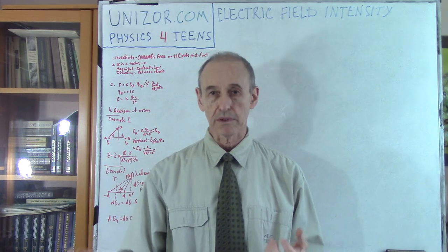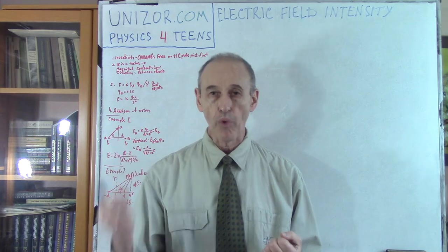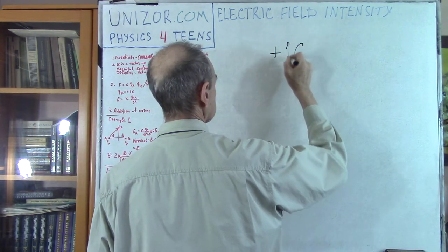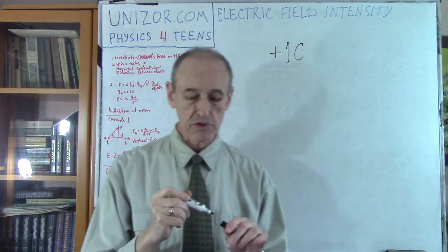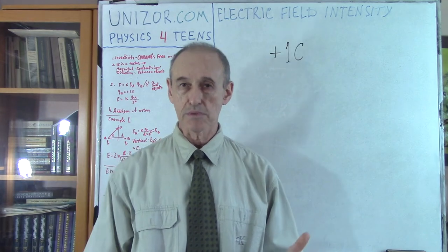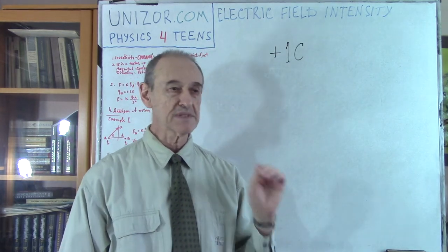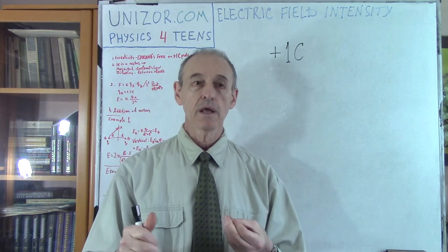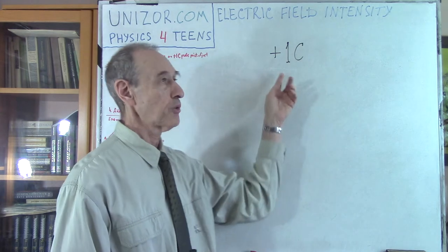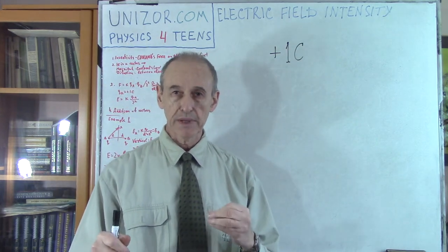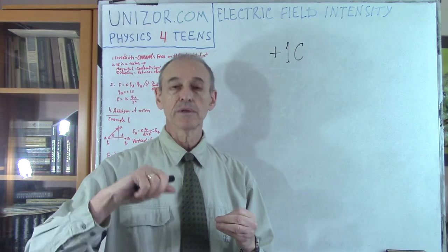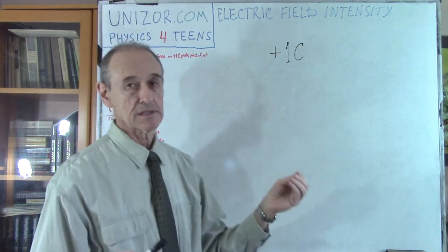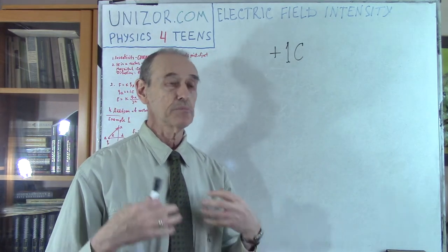We have to agree about what the probe is. If you put this probe into one electrical field of one main object or another, based on the force which this probe object is experiencing, we can judge which field is stronger, or if it's the same field at different distances from the source. The probe object, by definition, is a point object with electrical charge equal to positive one Coulomb. This force which the probe object experiences at a particular place in the electrical field sourced by the main object is called the electrical field intensity, or electric field strength, or sometimes just electric field.